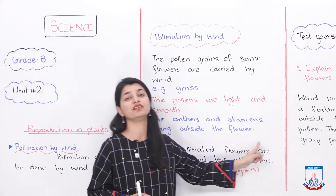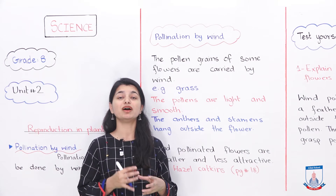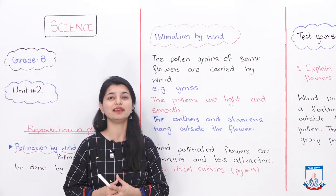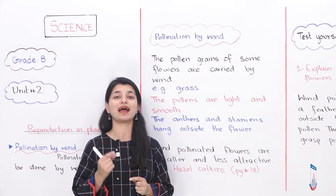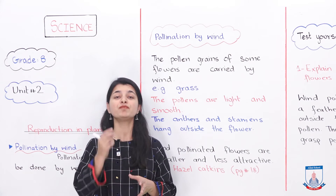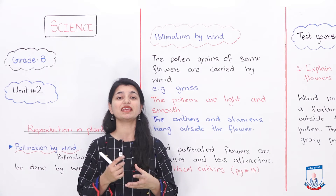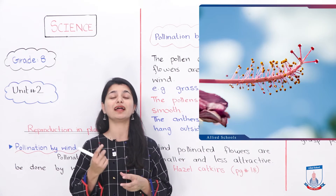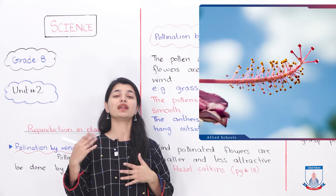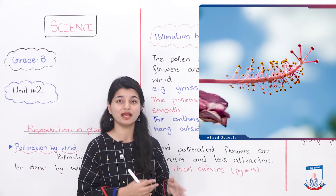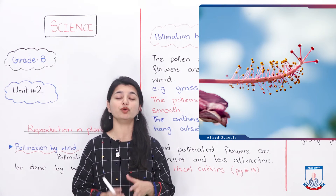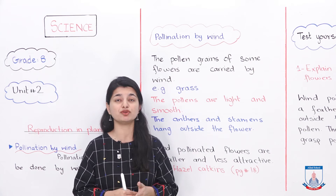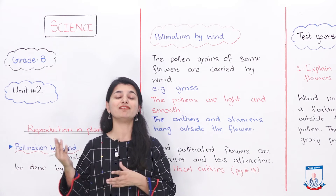The anthers and stamens hang outside the flower. As you can also see in the image, the anther and stamens are on the outside so they can be easily blown away by the wind. If they were inside, the wind would not be able to carry the pollen. So in wind pollinated plants, the anthers and stamens are positioned outwards so the wind can easily transport the pollen.